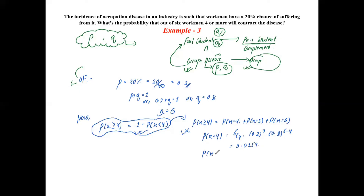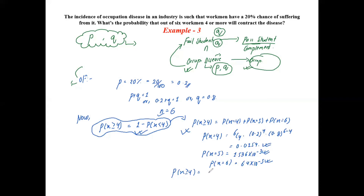In the same way, find P(X=5): the value is 1.536 × 10⁻³. And P(X=6): the value is 6.4 × 10⁻⁵. So P(X ≥ 4) is obtained by adding these values together, and your final answer will be 0.017, which is the required probability that out of six workmen, four or more will contract the disease.